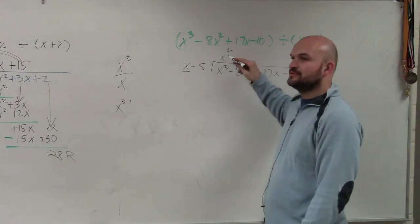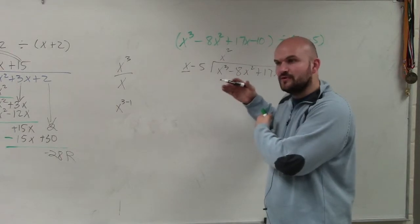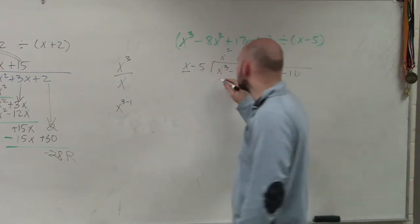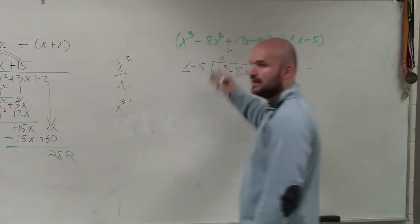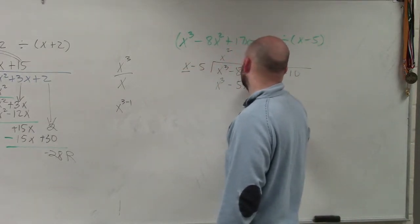Now, you take x squared. See, Justin, here's the problem. I'm going over this, and you're not paying full attention to it. This is what you need to be focused on. x squared times x is x cubed. x squared times negative 5, you've got to make sure you multiply by both of them, is negative 5x squared.